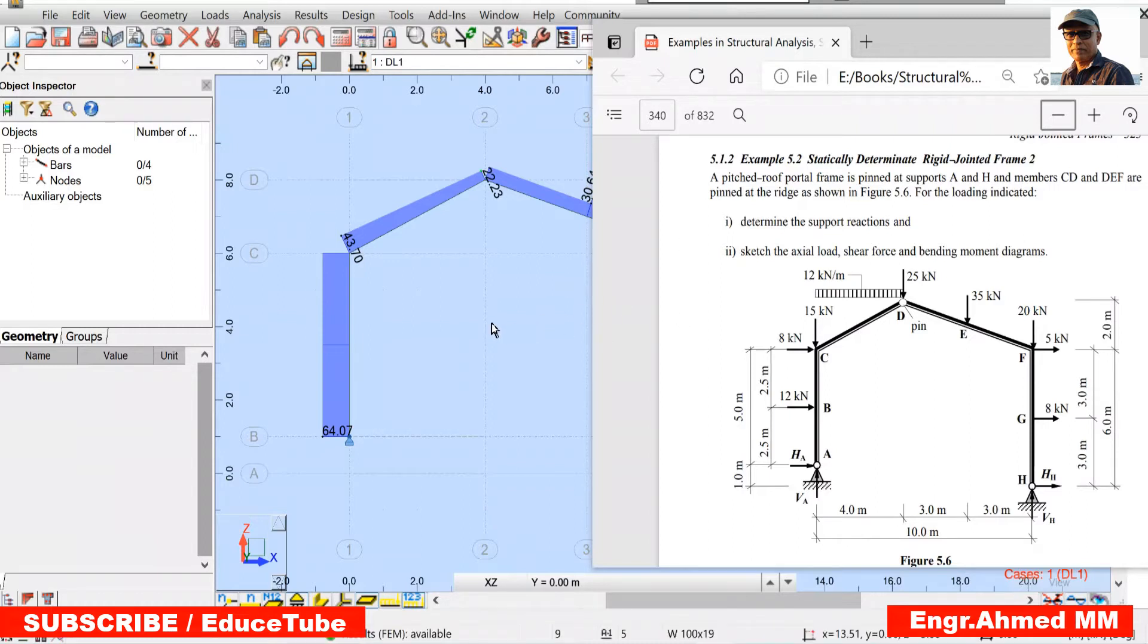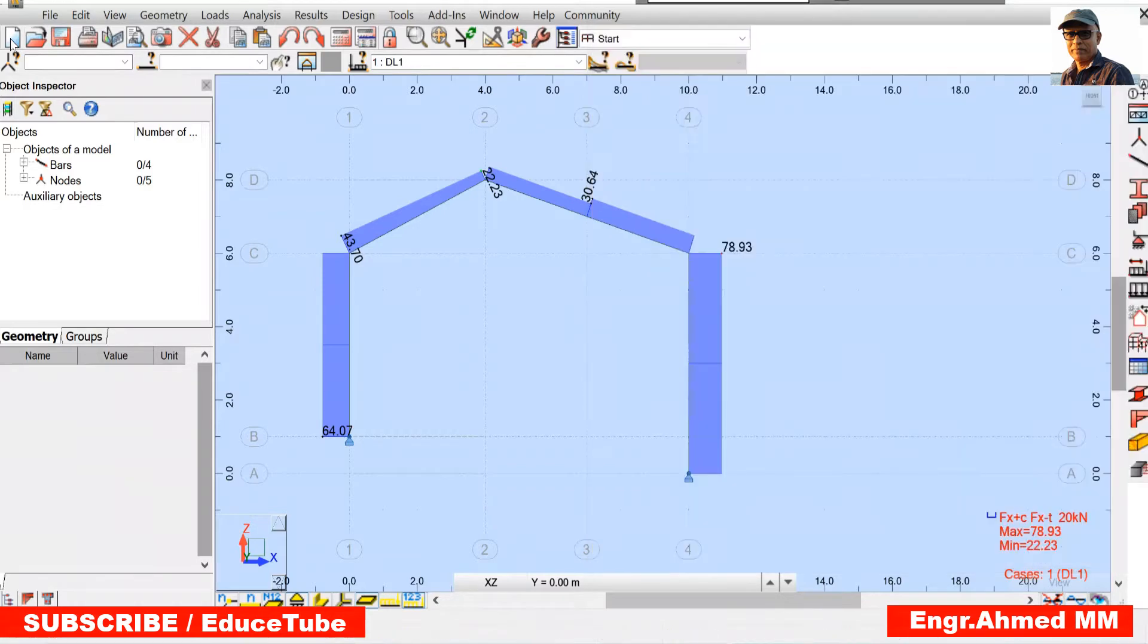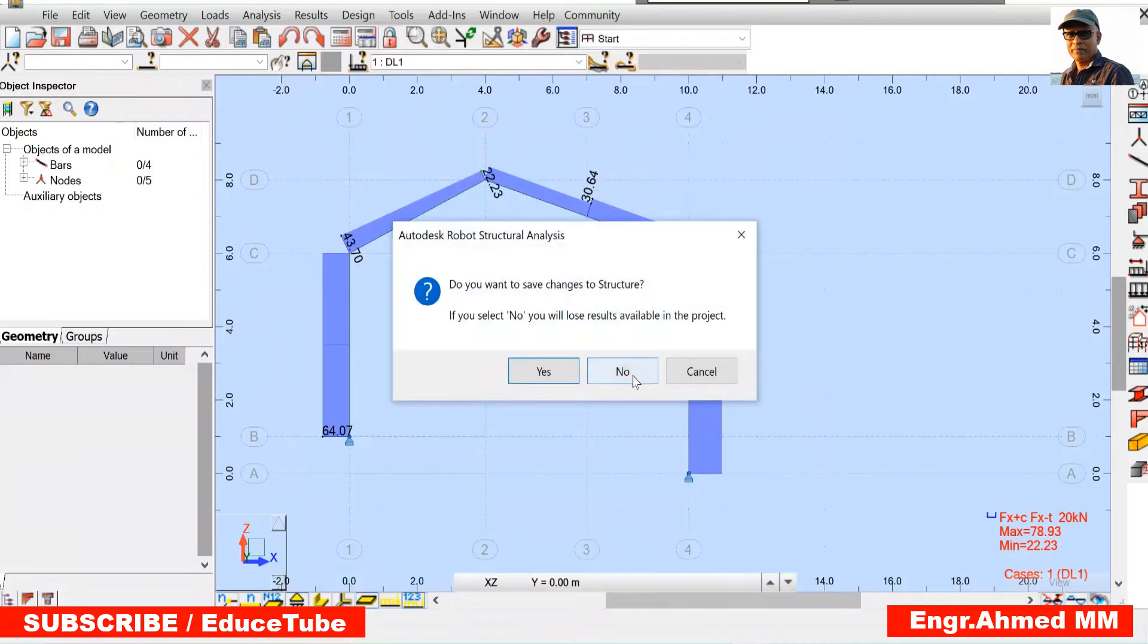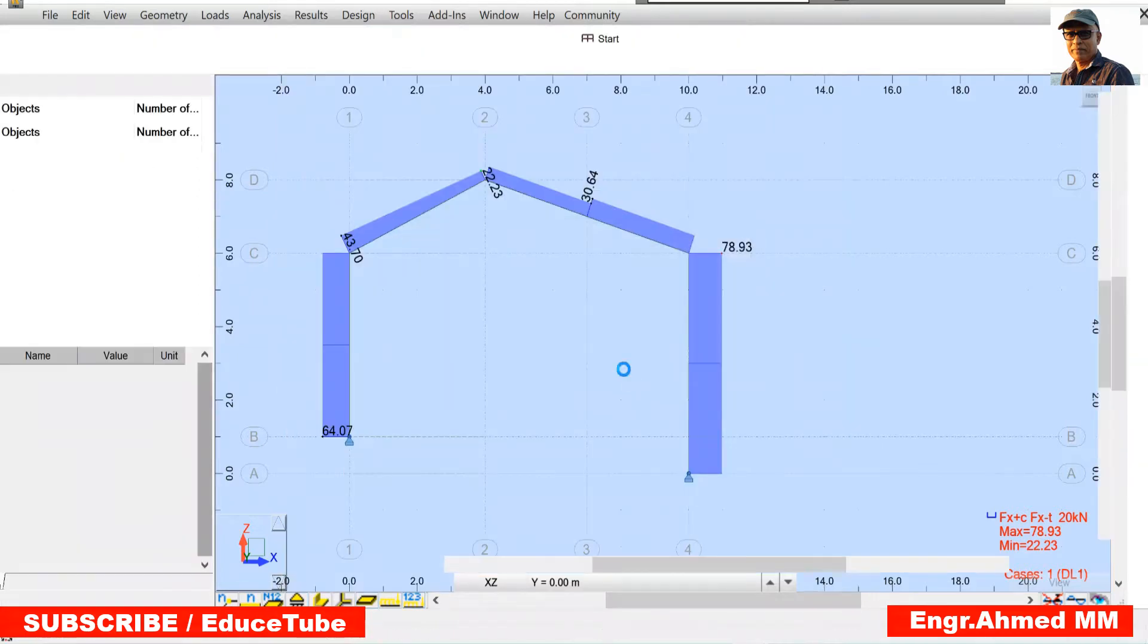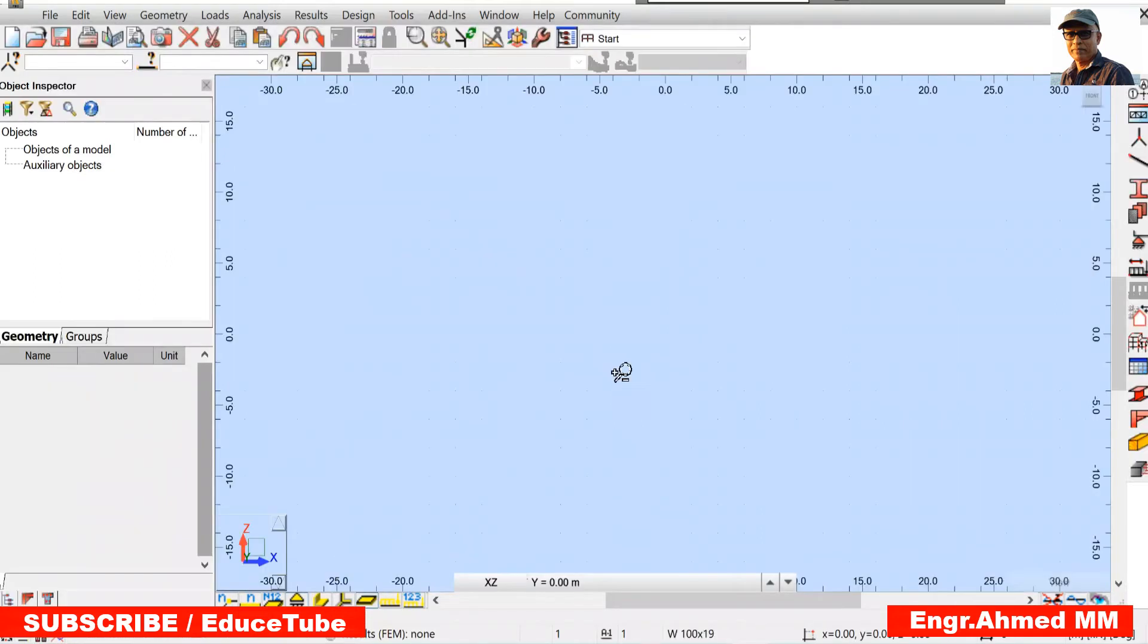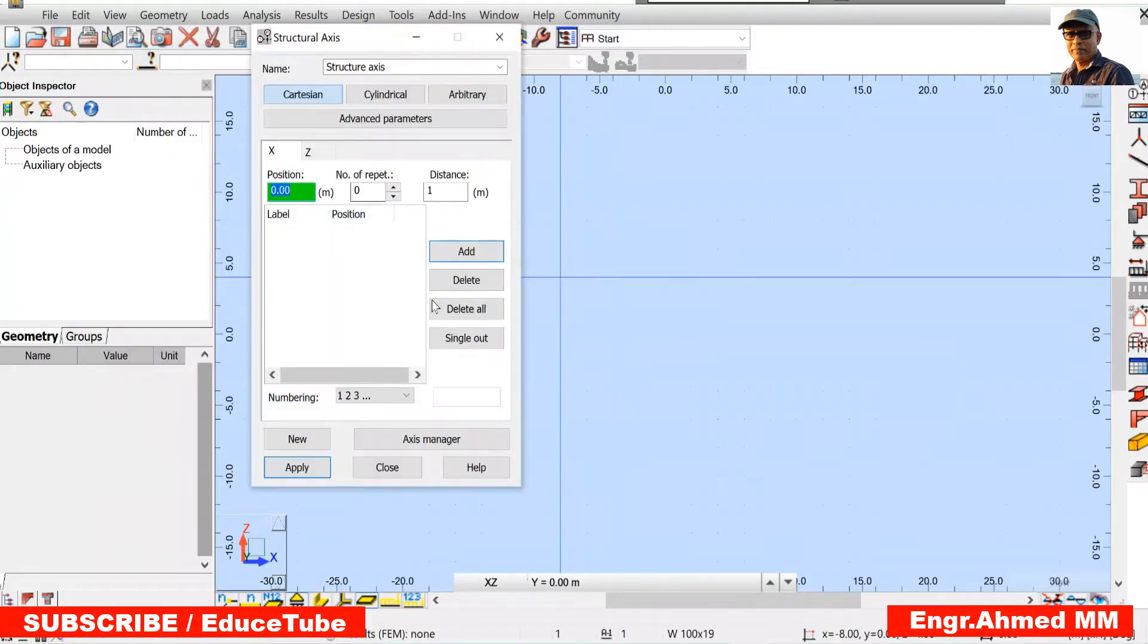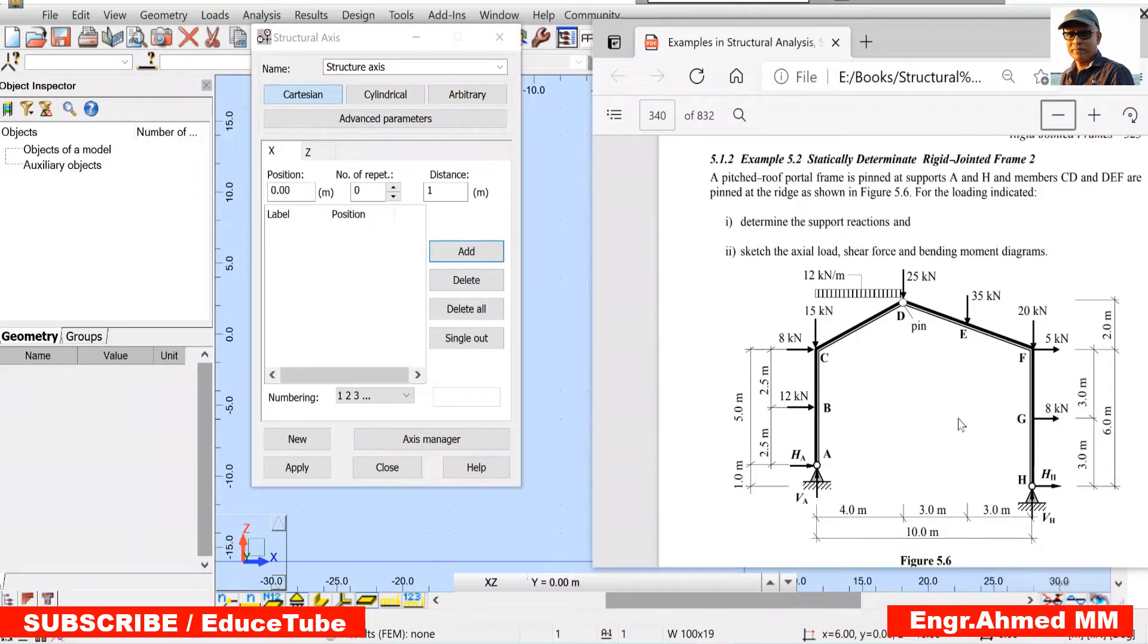So let's start from the scratch. Click on this 2D design, remove the previous one. Now we are at the right position to start. Click on geometry, axis definitions. Now we can start. What are the things we need to see? It is what are the dimensions shown in X axis and Z axis. So here in X axis, I mean X direction, it is 4, 3, 3. Let's do that first.